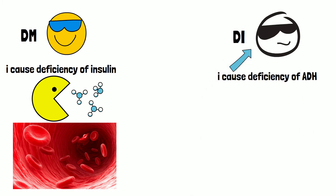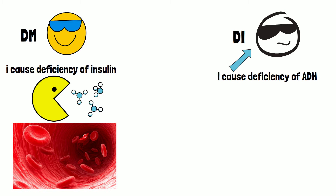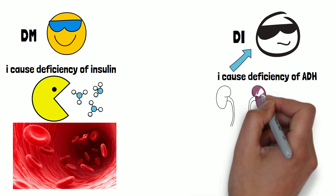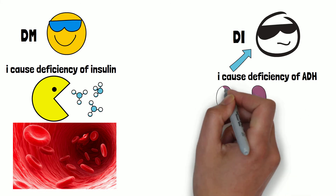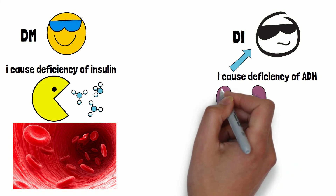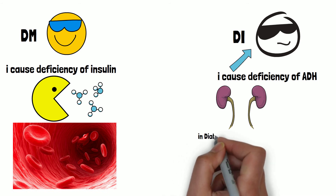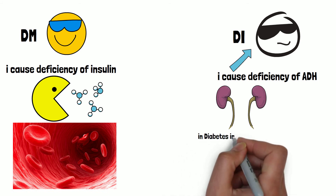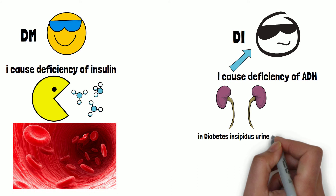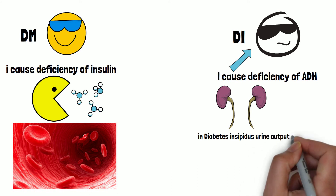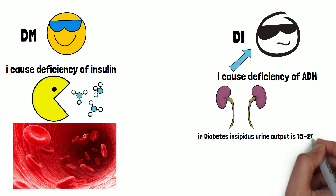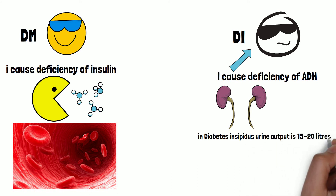Now let's talk about the kidney. Normally it produces one to three liters of urine each day, but with diabetes insipidus, urine output exceeds three liters every 24 hours and is usually around 15 to 20 liters per day — that's a lot of urine.